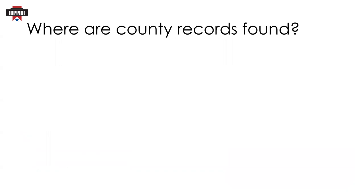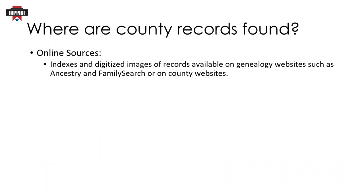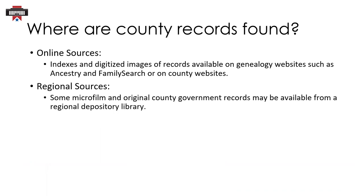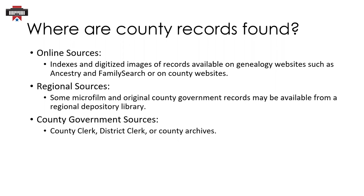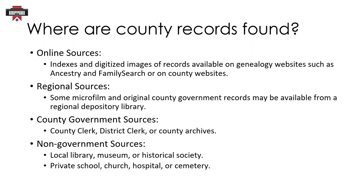Where are county records found? Many county records are now online, either digitized or on genealogy websites such as Ancestry and FamilySearch, or on county websites. Many of these records can be searched by name and will show you a text transcription from an index, and some collections even contain images of the actual records. Some county records are stored in regional depositories, either as microfilmed copies or as archived original records, or both. Some original records may have been kept with the county — you'll want to contact the county directly about which records they hold and how long they are required to keep those records. Other helpful records may be held at local libraries and museums, or at schools, churches, and cemeteries.